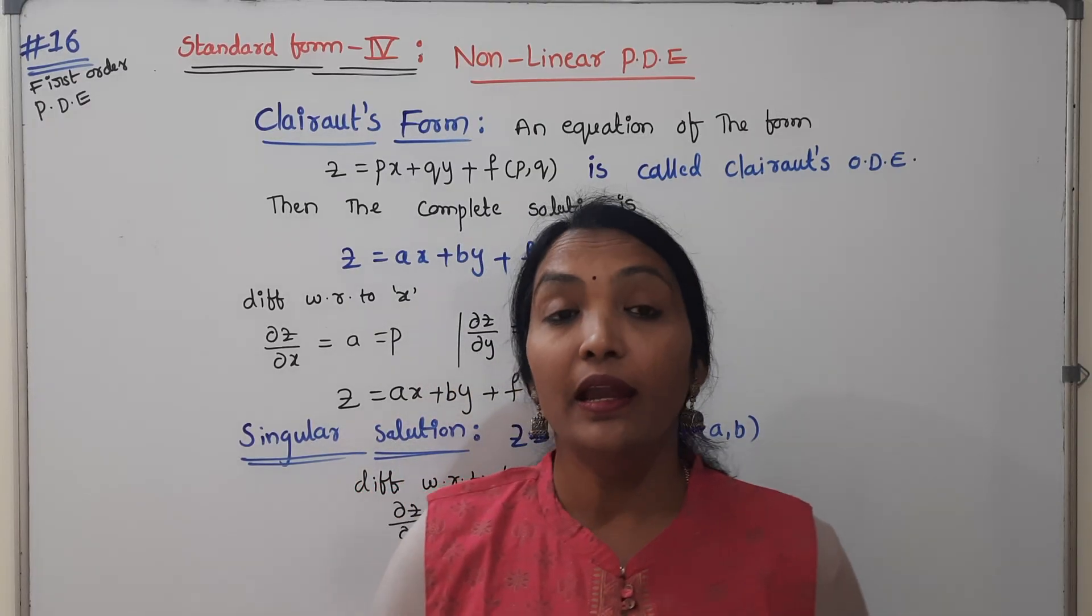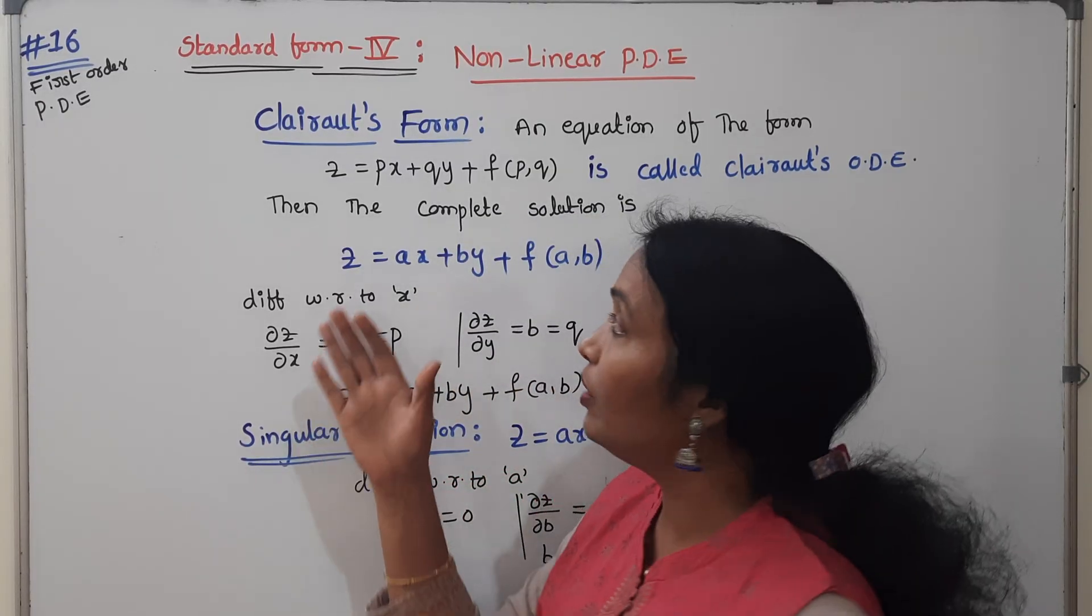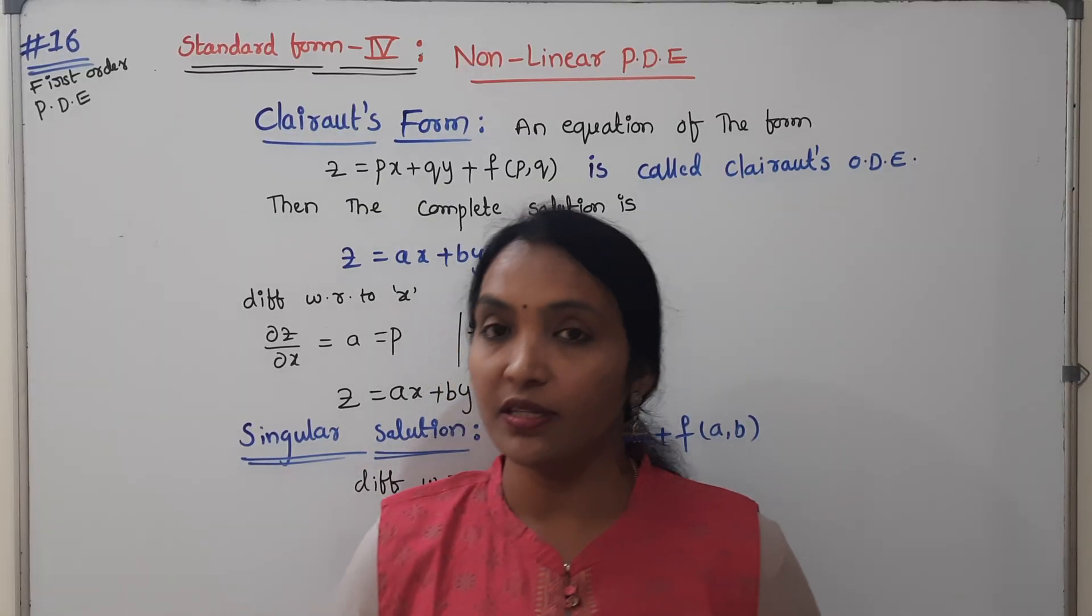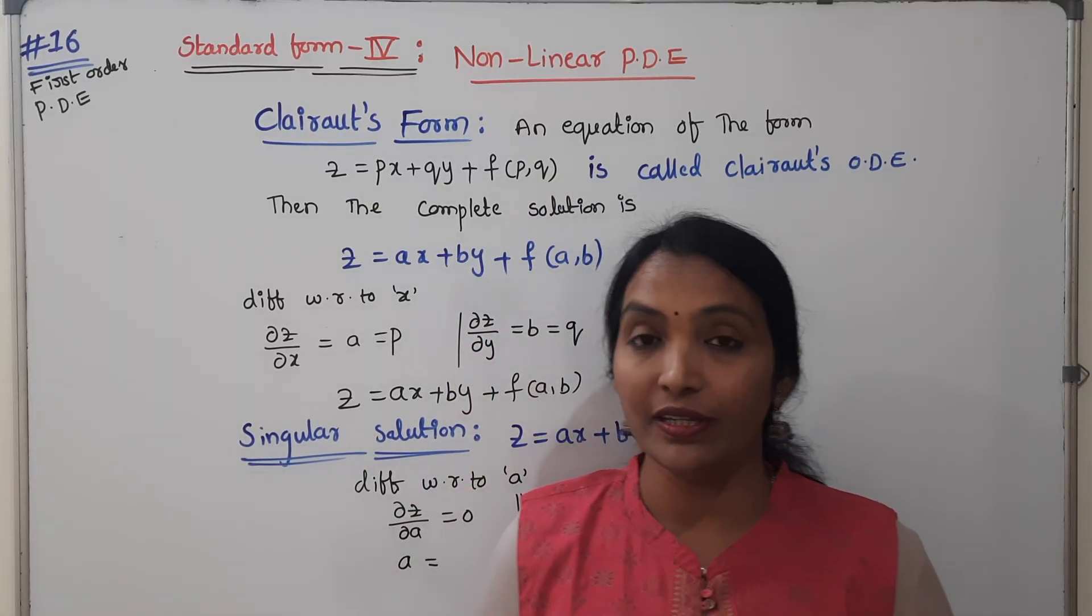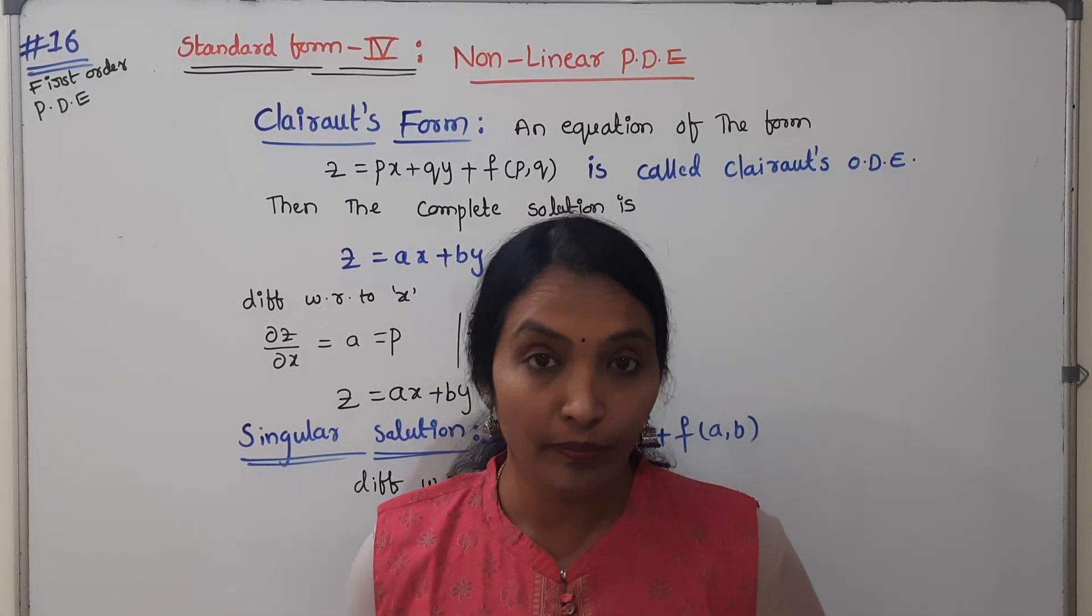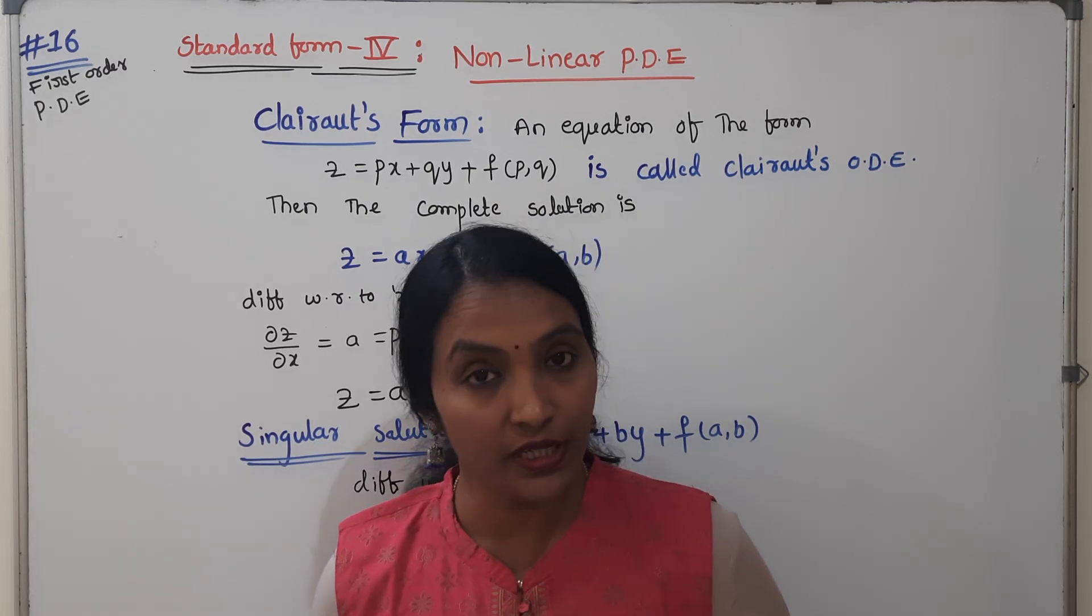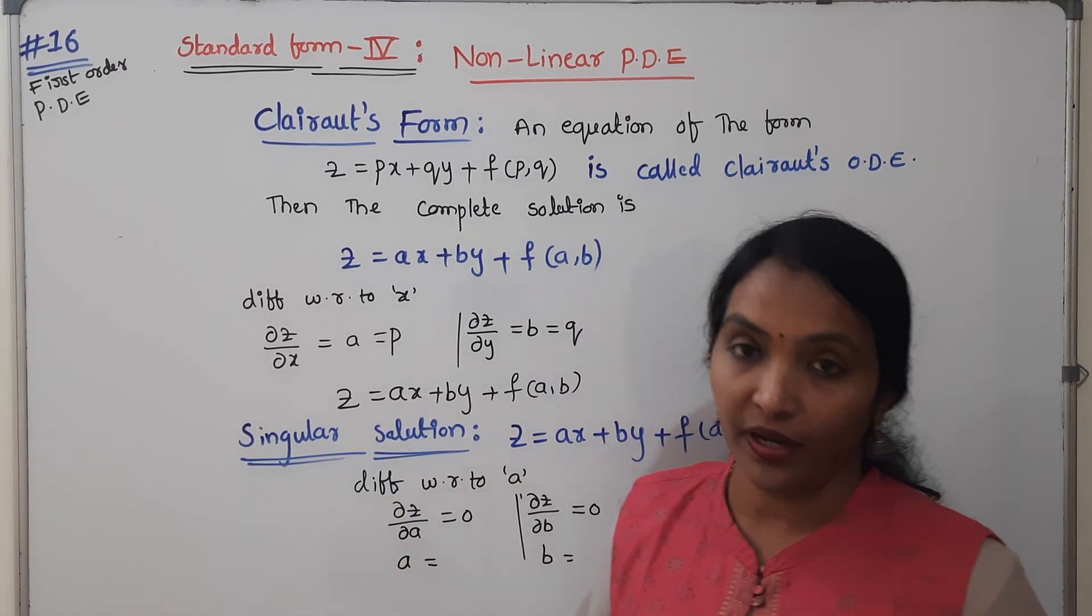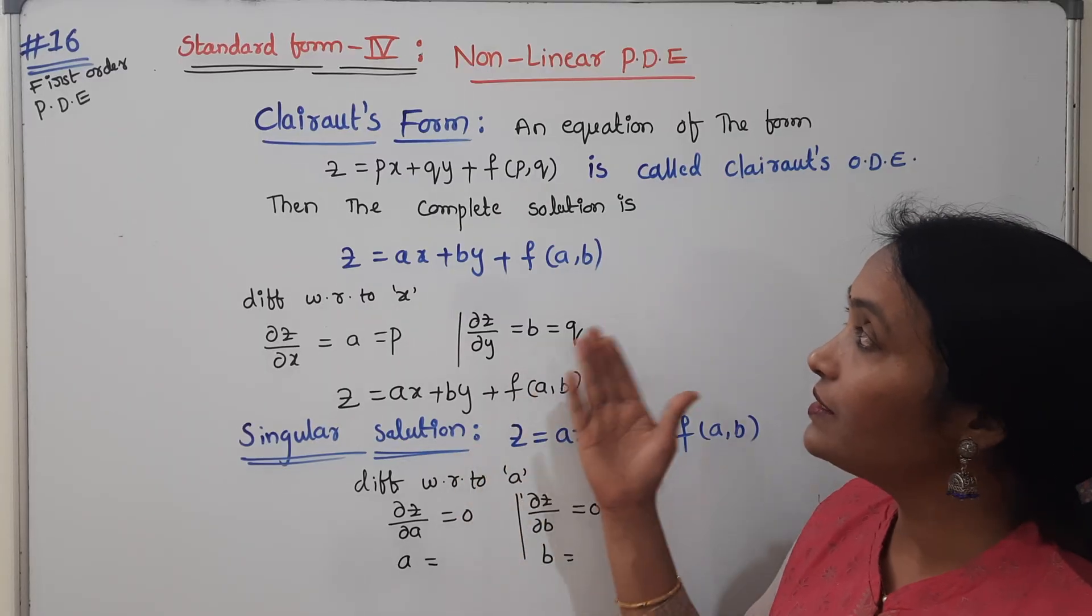We will eliminate linear and non-linear. Today's one is fourth standard form. We have already seen the first standard form: F of P and Q formula. Second is Z, P, Q. Third is the separable method, and fourth one is Clairaut's form.